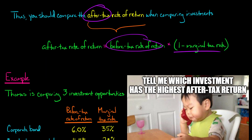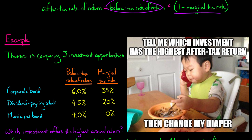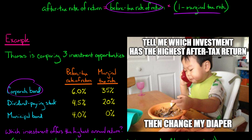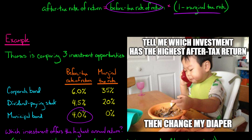Let's do this with an example. Thomas is comparing three different investment opportunities. He could buy a corporate bond and earn a before-tax rate of return of six percent, invest in a dividend-paying stock and get a return of four and a half percent, or buy a municipal bond and earn a rate of return of four percent. The question is: which of these offers the highest annual return to Thomas?